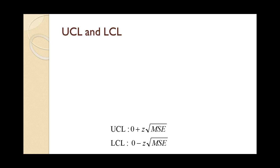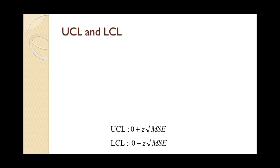Since the mean squared error was demonstrated in detail in a prior tutorial, that value will be given to you in this tutorial. We now have everything we need to construct a control chart for forecast error. The upper control limit is the z score times the square root of the mean squared error, and z is usually 3. The lower control limit is just the negative of the upper control limit. The centerline is always zero, and the data points are the error values.